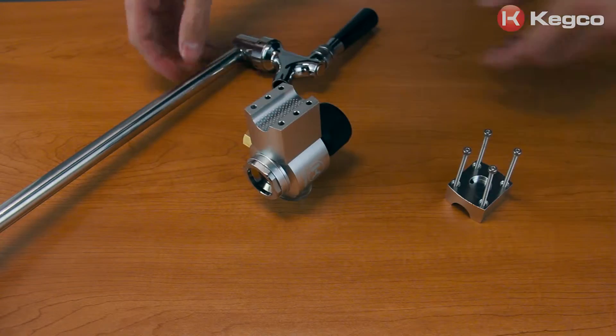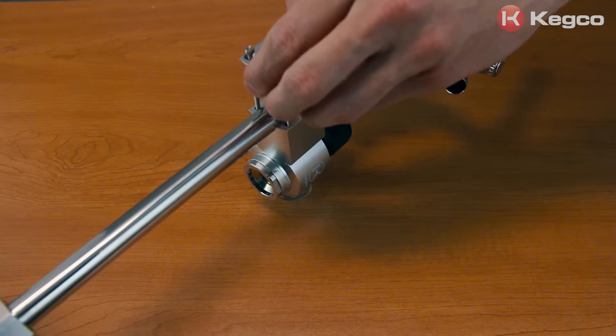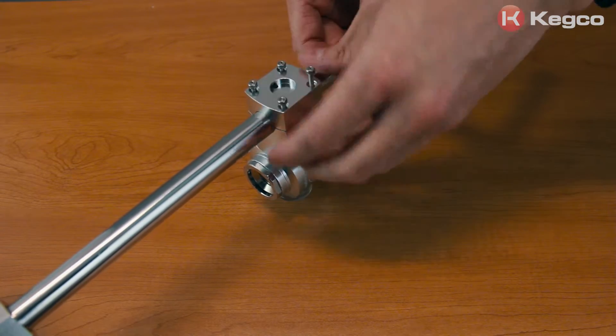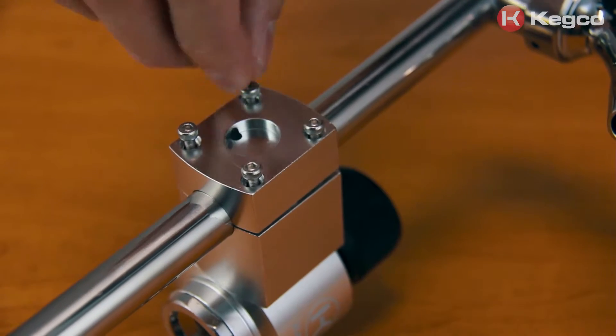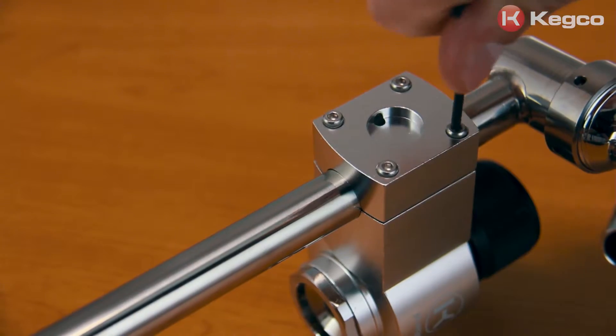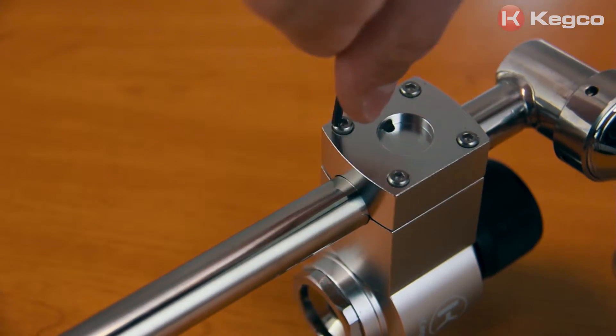line the wider part of the bracket up with the back of the regulator. Then place the rod between the two brackets and use the long screws to clamp the brackets to the rod and fasten it to the back of the regulator. An Allen wrench is necessary to tighten the screws.